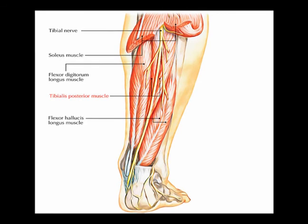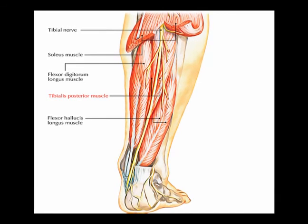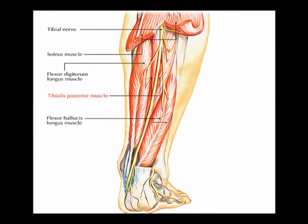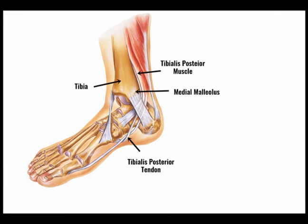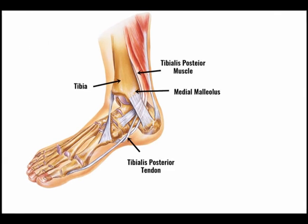The tibialis posterior muscle is innervated by the tibial nerve, vertebral levels L4, L5, and S1. Its concentric actions are inversion and plantar flexion, and it also helps to support the medial longitudinal arch.